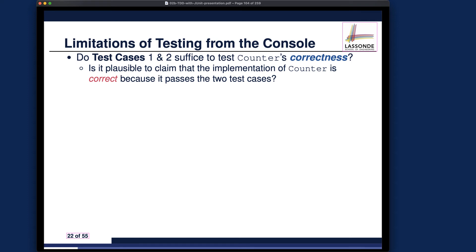Time for reflection. So far we have developed two console testers: console tester one and console tester two, focusing on two aspects for assessing the correctness of the counter solution. Console tester one makes sure that when you try to decrement the value of the counter from its minimum value, you get the value too small exception as expected. For console tester two, you increment the value three times to its maximum, and on the fourth increment you get the value too large exception.